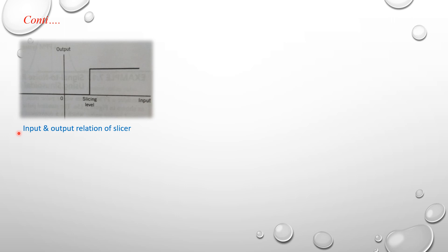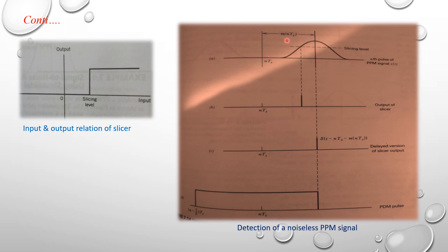The output of the slicer is differentiated and then half-wave rectified, yielding very short pulses approximating an impulse each time the amplitude of the pulse in the received PPM wave passes through the slicing level. The figure shows the nth pulse of a PPM wave and the short pulse produced as the pulse passes through the slicing level. Also shown are the reference point, the samples m(nTs), and the output of the slicer at the slicing point.